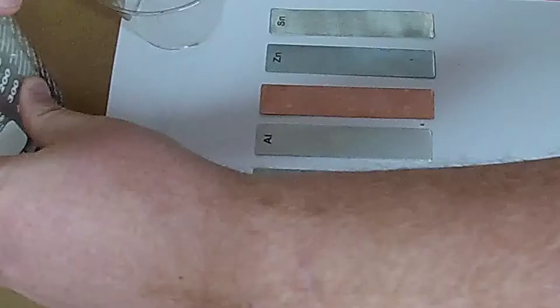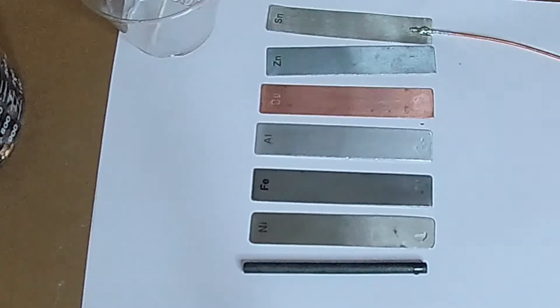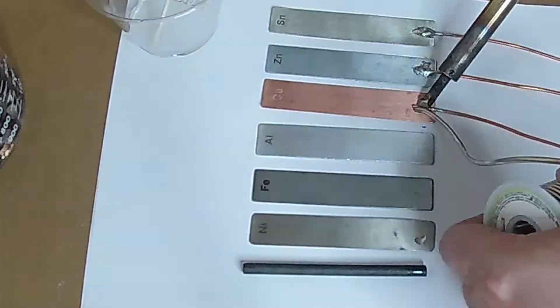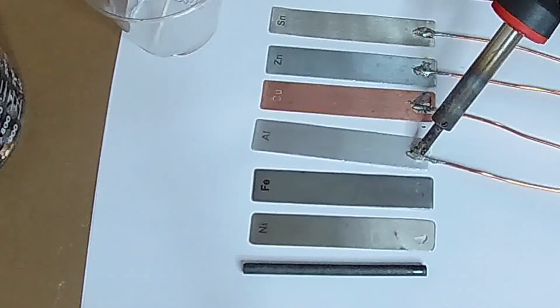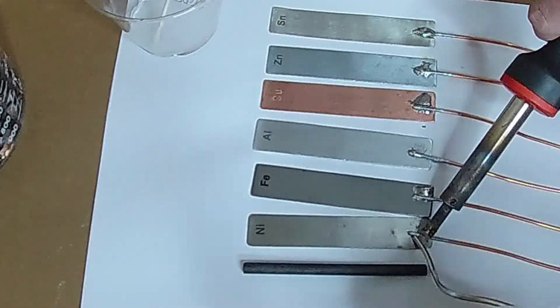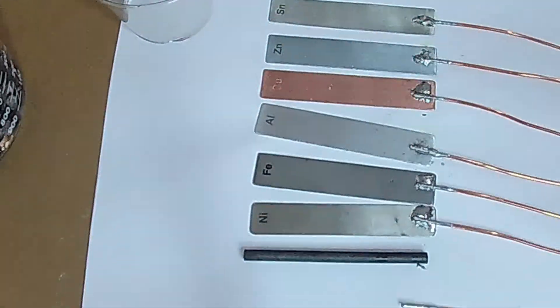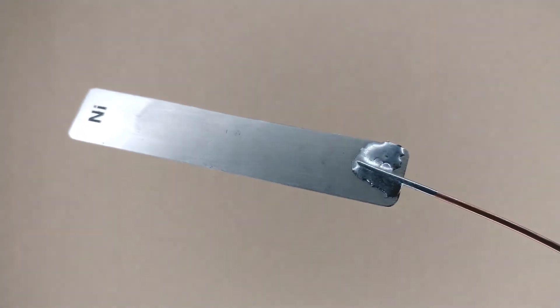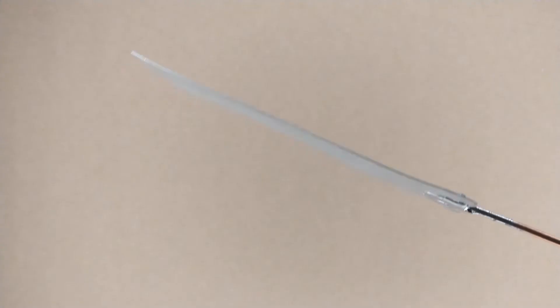Let's see what else we can solder. Pure zinc will solder. Pure nickel will solder. Pure tin has a melting point too low and will weld.